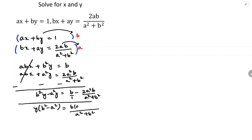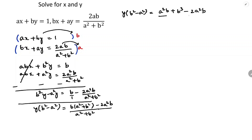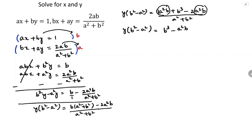So if I multiply b into a square plus b square minus 2a square b, the right side becomes: a square into b is a square b, b into b square is b cube, giving b cube minus 2a square b by a square plus b square. Combining like terms: a square b minus 2a square b gives minus 1a square b, so the result is b cube minus a square b by a square plus b square.